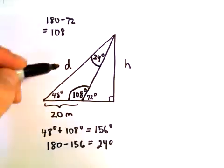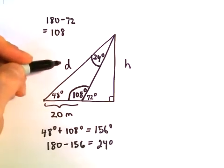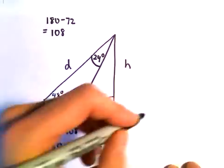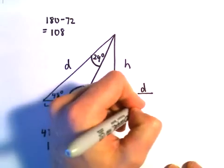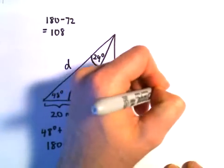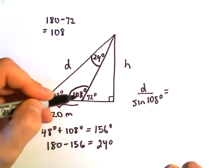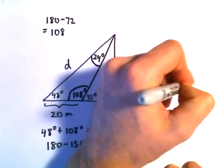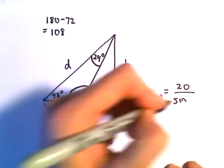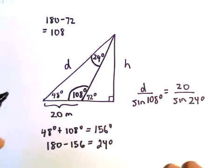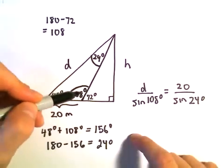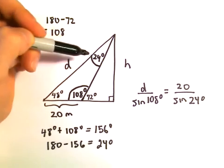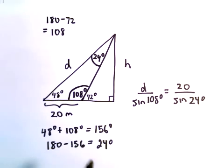And now I think we're in a position to actually figure out d using the law of sines. We could say that d over sine of 108 degrees, we could say that that's going to equal 20 over sine of 24 degrees. I'm just saying this length over this angle is going to equal this length over this angle, sine of that angle I should be saying, in both cases.